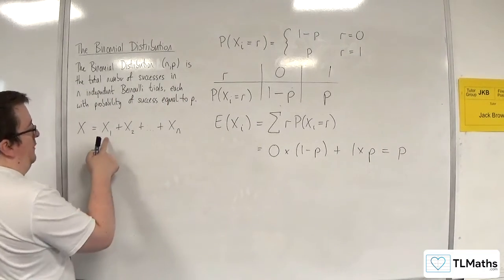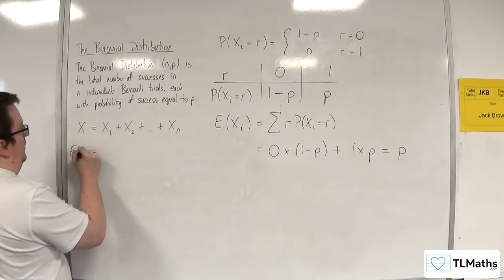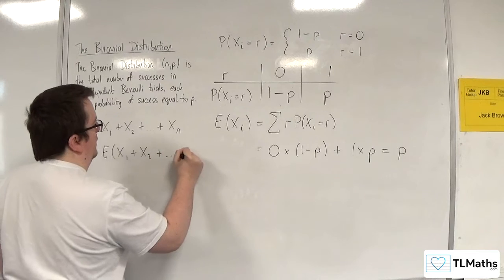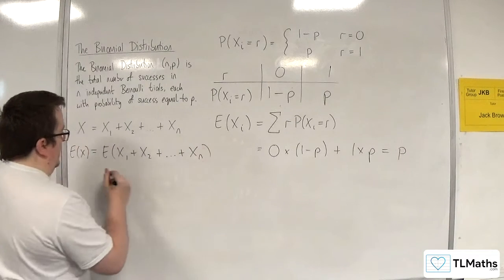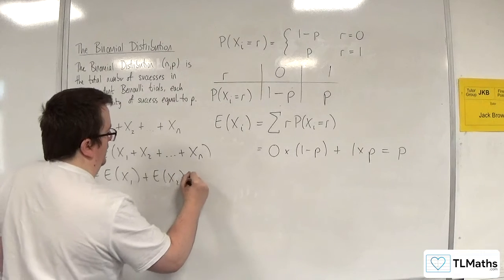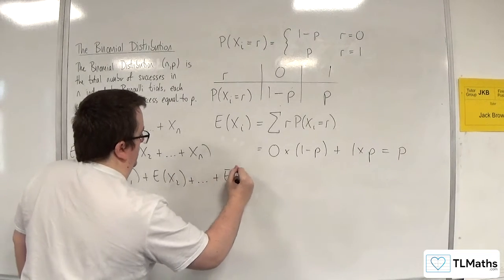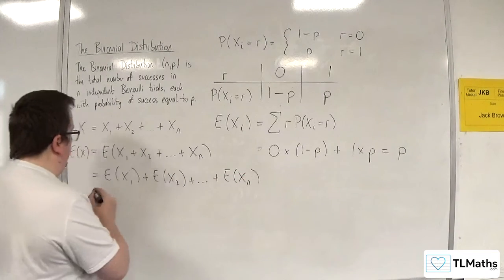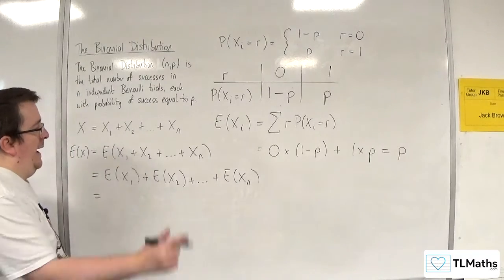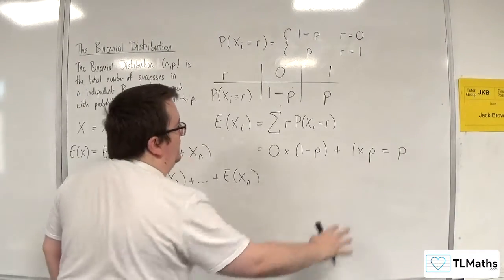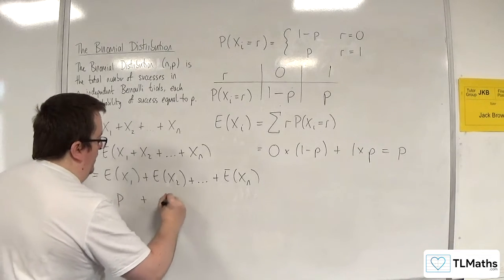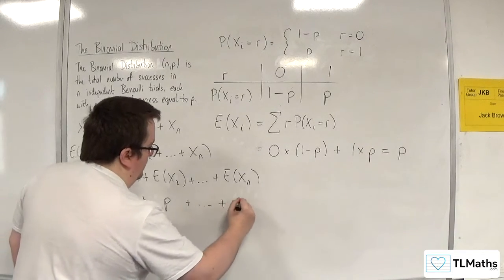So the expected value of X1... If I want E of X, I know that's E of X1 plus X2 plus and so on up to Xn. And I know that I can break that apart. We've seen that we're allowed to do that with expected values. And I've just worked out the expected value of each of these distributions is P. So I've got P plus P plus and so on plus P.